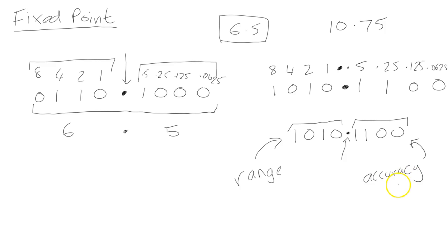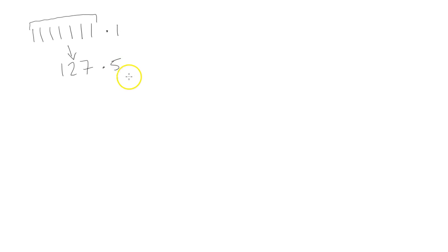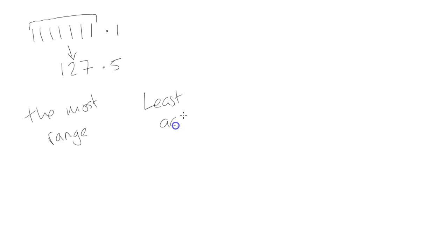So let's take a look at that as an example. If I used seven ones and then 0.1 — so there we have seven ones — the largest number I can make with that number is 127.5. We've got the seven bits which give us the 127, and the most accurate we can make it is to one decimal place, but it can only be either a 0 or a 0.5. So this is the largest number we can make — this has the most range and the least accuracy.